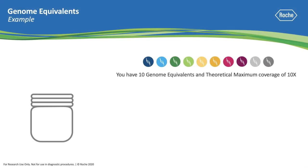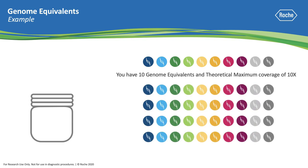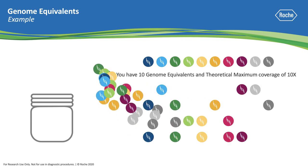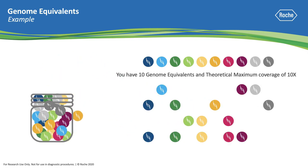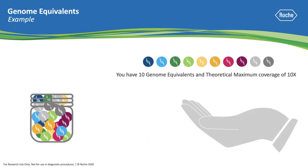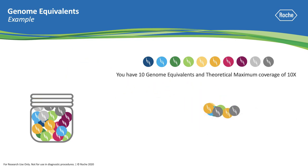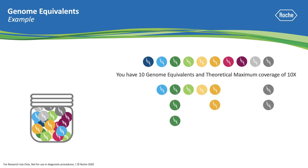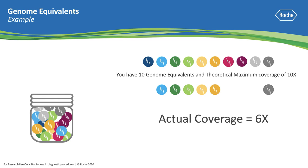To illustrate, here are 10 colored marbles representing 10 genome equivalents and a theoretical maximum coverage of 10x. There's also an empty jar that we'll need to fill in order to have enough to sequence. In order to fill the jar, we'll make replicates of the original 10 marbles and randomly take enough marbles to fill this jar. From the jar, the marbles are again randomly picked based on their desired coverage, and then the duplicates from the selected marbles are removed. And we're left with 6x coverage.